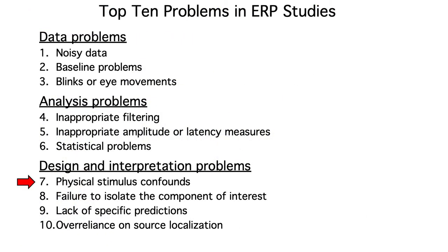Let's start with a common design problem: physical stimulus confounds. This is where the researcher is comparing two or more conditions in an attempt to study a psychological process, but there's also a difference in physical stimuli between the conditions.